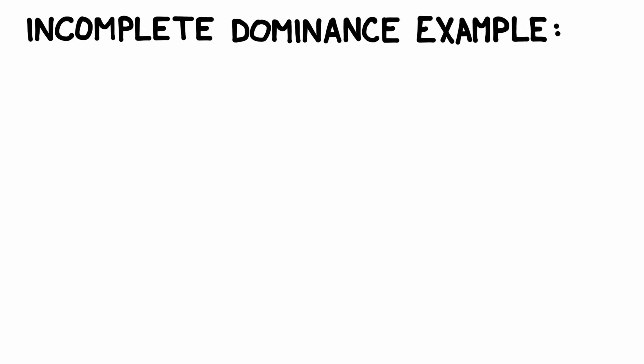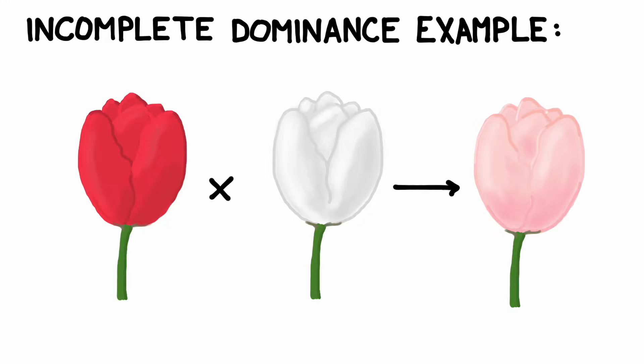Many kinds of flowers show incomplete dominance in terms of their petal color. If a red flower is crossed with a white flower, the resulting offspring will be pink. Tulips, roses, carnations, and snapdragons are common examples of this. Humans can also show incomplete dominance in terms of hair texture.